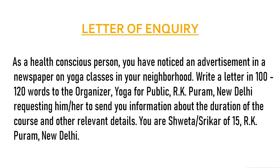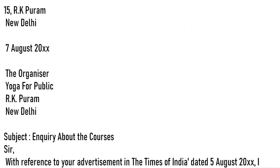So we have the sender's address — 15 Archi Puram, New Delhi — and the sender's name. The receiver's address is also given: the organizer, Yoga for Public, RK Puram, New Delhi. The subject is also clear — we need to collect information about yoga classes. Let's start this example. We mention the sender's address, then the date, then the receiver's address with designation. The subject is: inquiry about the courses.